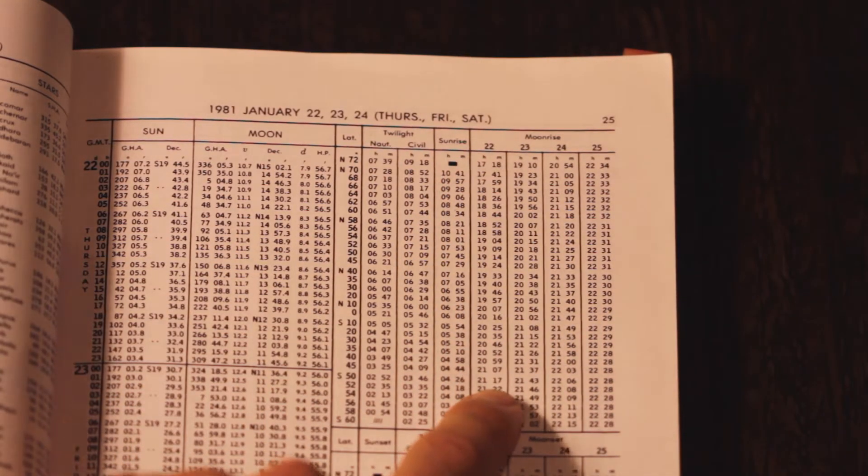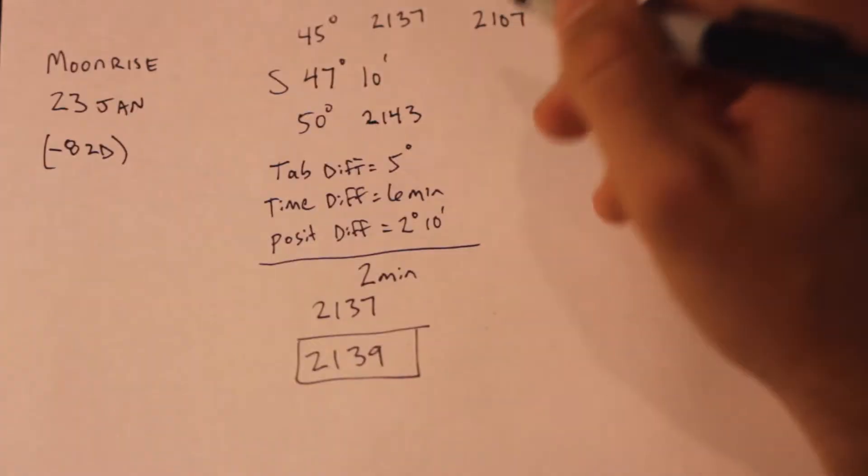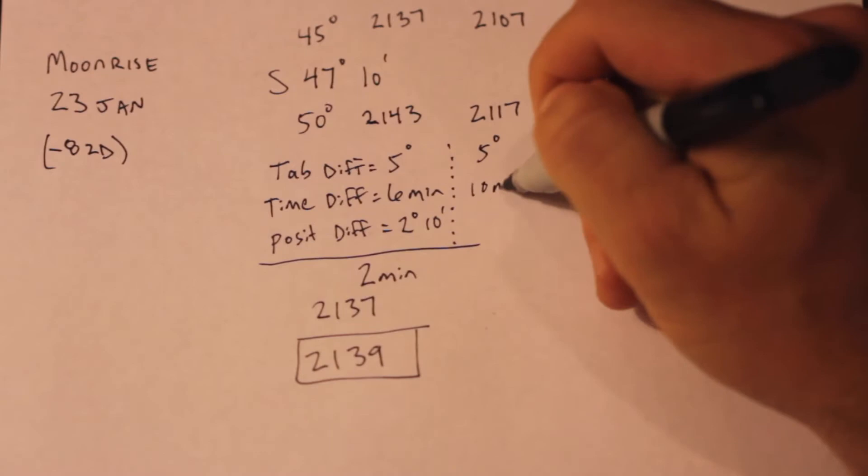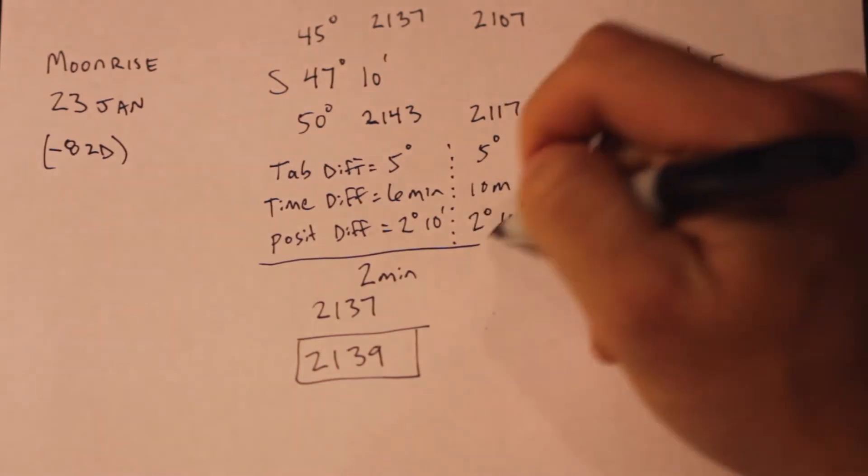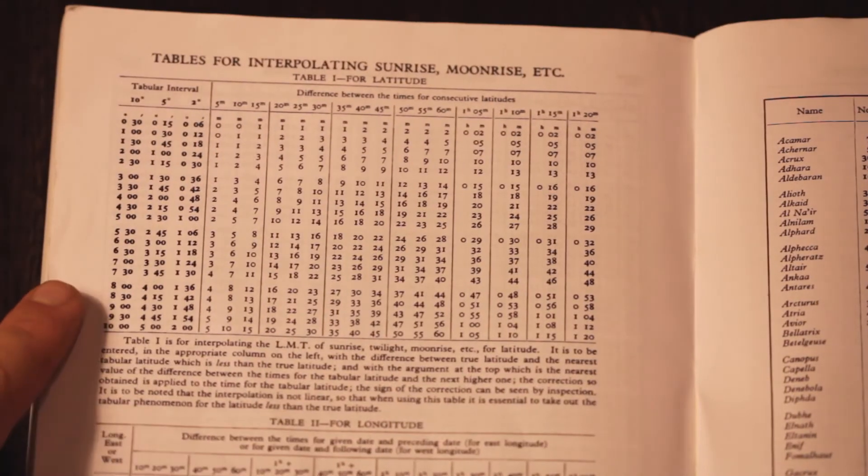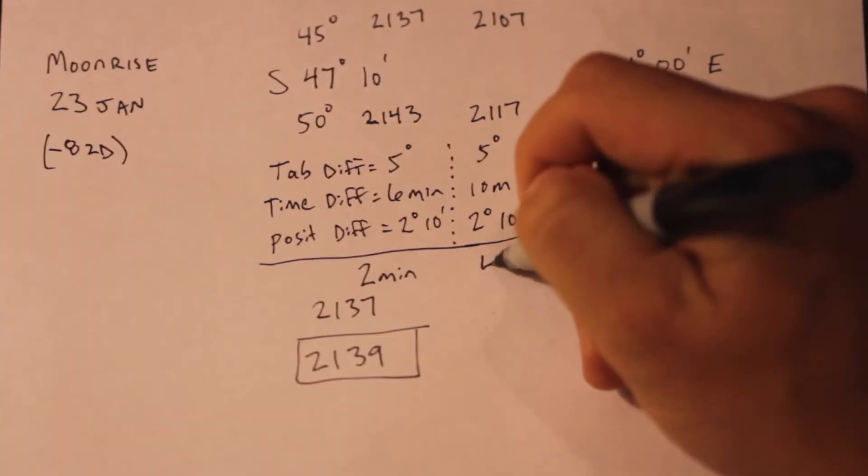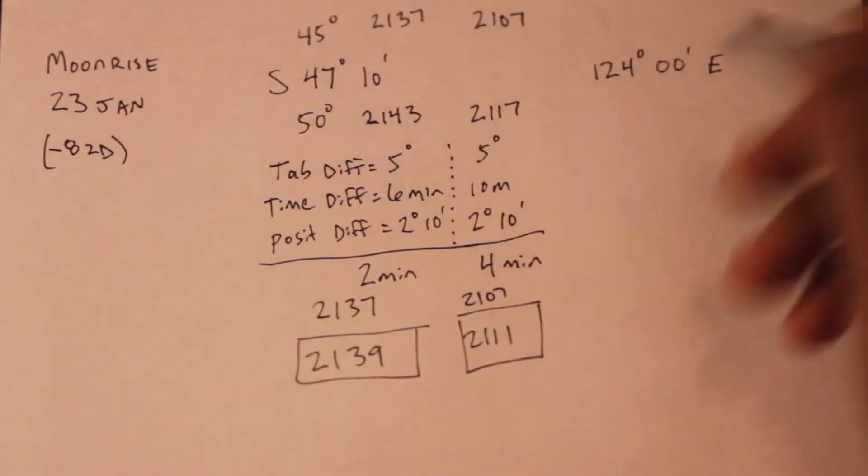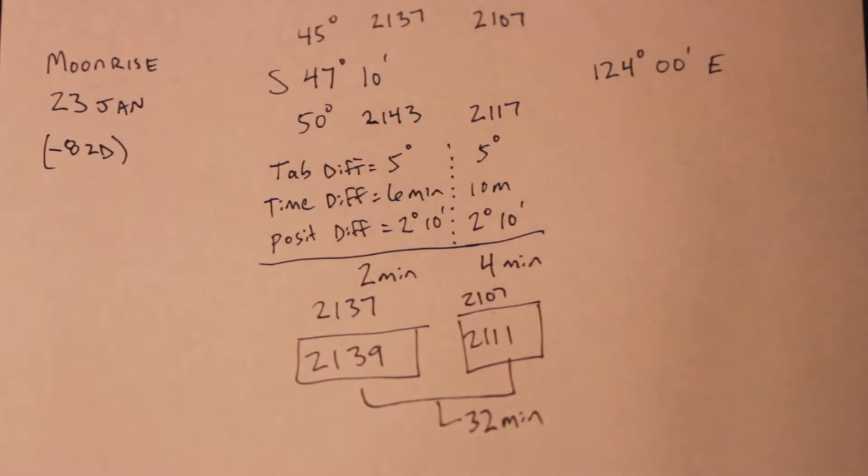And then we pull the bracketing values of 2017 and 2117 for the preceding day. That means we've got a tabular interval of 5 degrees, a time difference of 10 minutes, and the same position difference as the last day. Table 1 this time gives us a correction of 4 minutes, so we can apply them and come up with latitude corrected times for moonrise on our day and the preceding day.